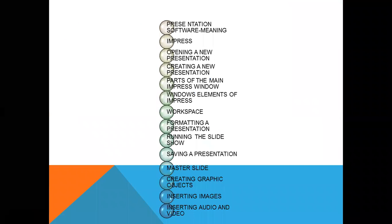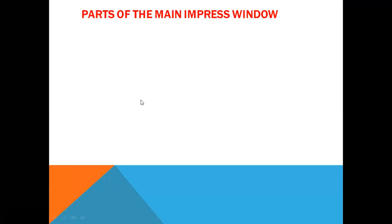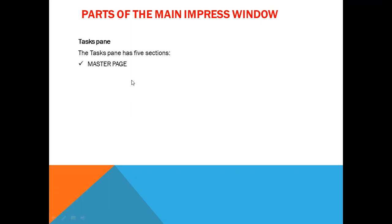We are going to talk about two topics. In the last class, we talked about parts of the main interface — the first three parts, including the slide pane and workspace. We are going to cover the remaining things in this class, starting with the Task Pane. There are five sections in the Task Pane.